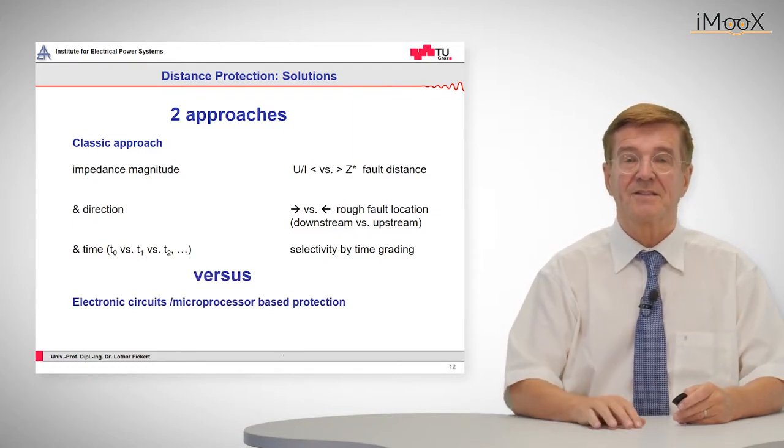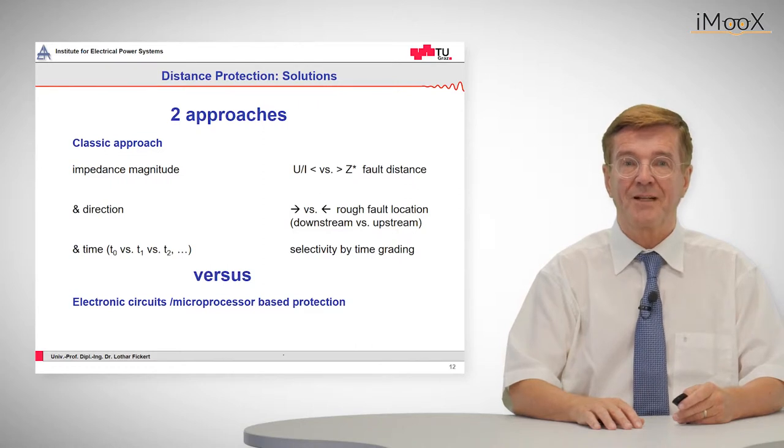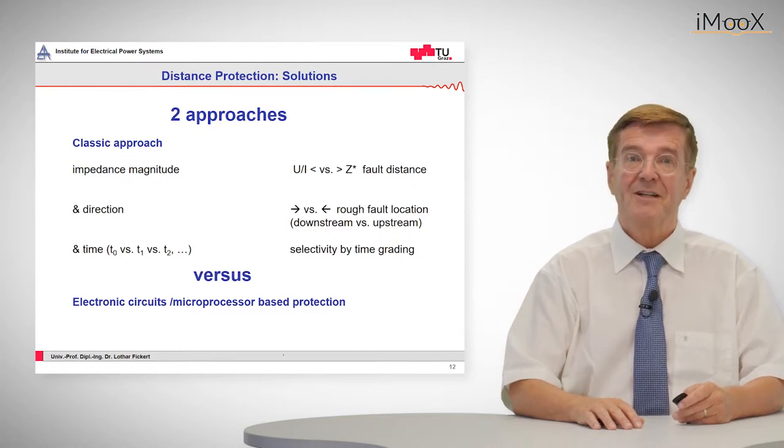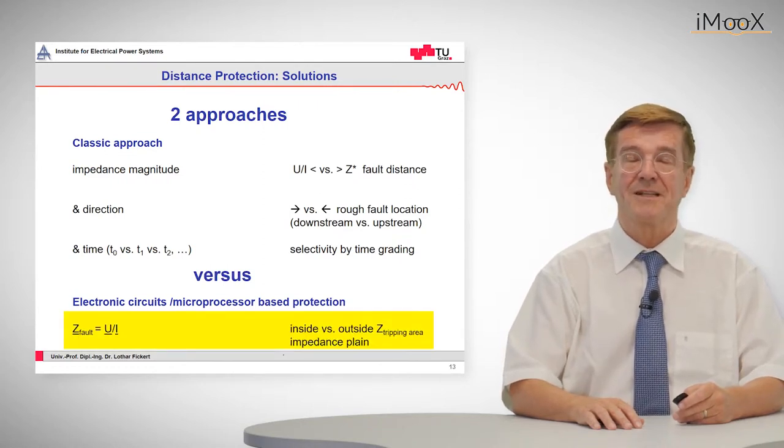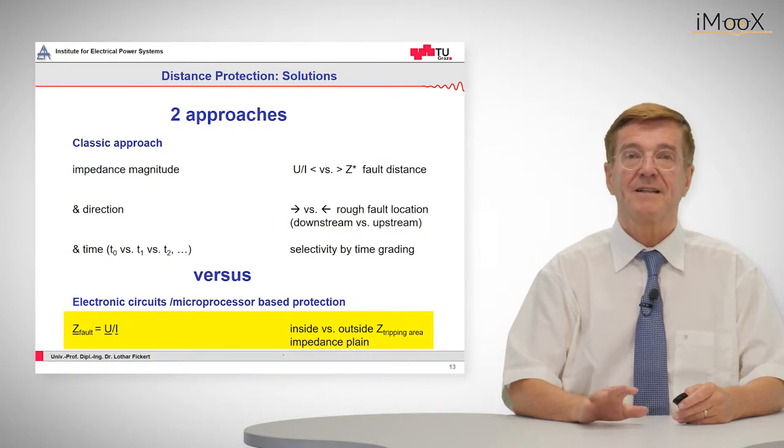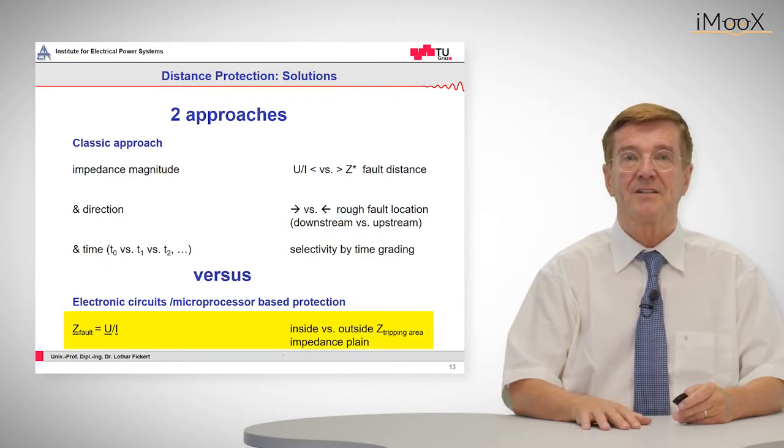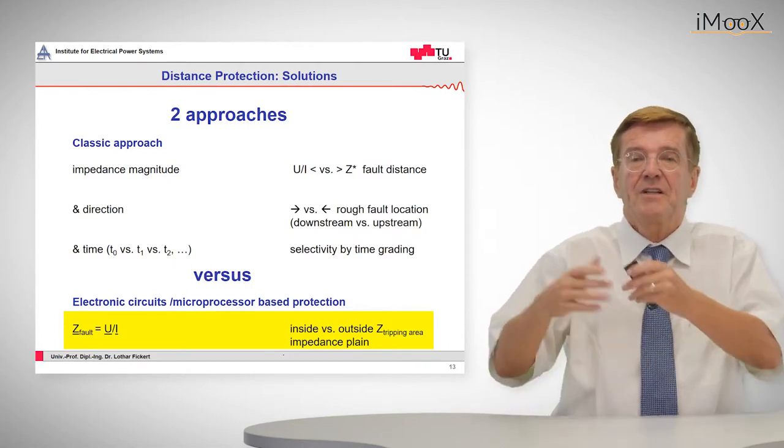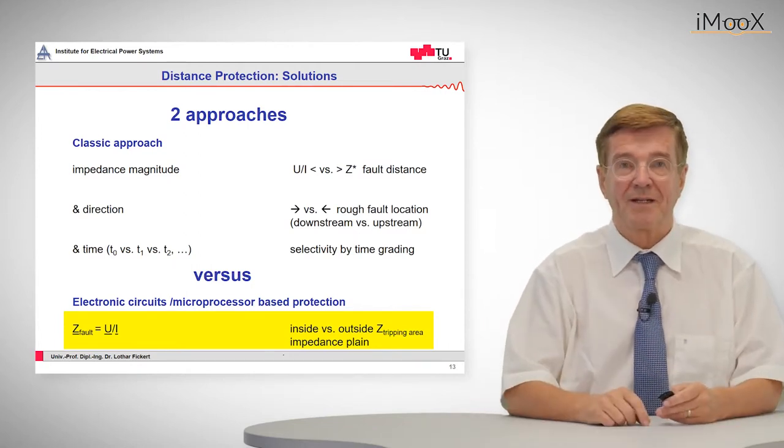And this is versus the electronic circuits or microprocessor protection which just determines in the impedance plane the complex impedance and decides whether it is inside or outside the so-called tripping area.